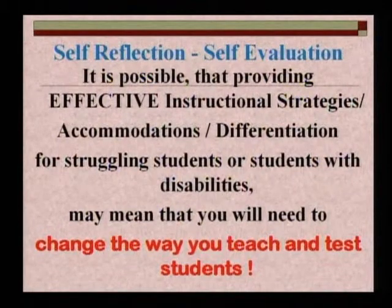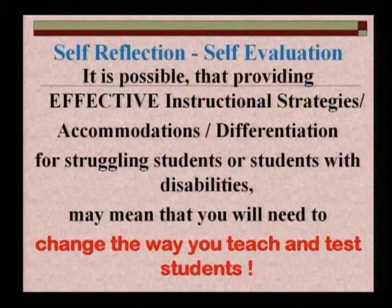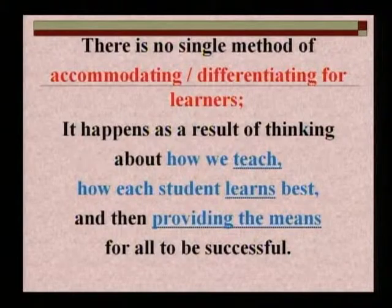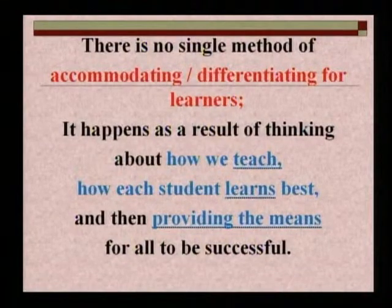When we're planning and when we're teaching, we need to have a self-reflection or self-evaluation process going on in our minds. It is possible that providing effective instructional strategies, accommodations, or differentiation for struggling students or students with disabilities may mean that we need to change the way we teach and test students. There is no single method of accommodating or differentiating for learners — it happens as a result of thinking about how we teach, how each student learns best, and then providing the means for all to be successful. Thank you.